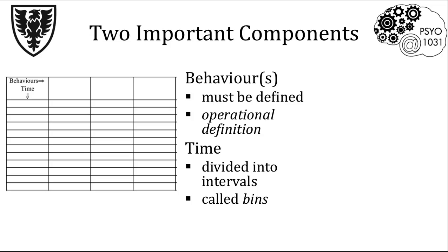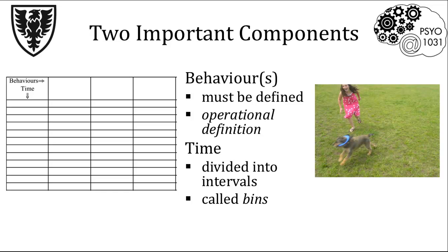Let me start with an example. For instance, you might wonder if a particular dog is friendly, like this dog here. There are certain behaviors that you would look for in order to make this decision — for instance, you might watch to see if the dog growls or if the dog barks. You could define these two behaviors like this.